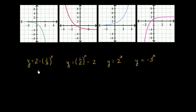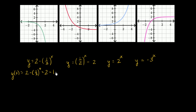One thing I like to do is just think about what happens when x is equal to 0. Especially when x is in an exponent like this, y of 0 is going to be equal to 2 minus 1 third to the 0 power. That's equal to 2 minus 1, since 1 third to the 0 is 1, which is equal to 1. So in which of these graphs, when x is equal to 0, do we have y equaling 1?